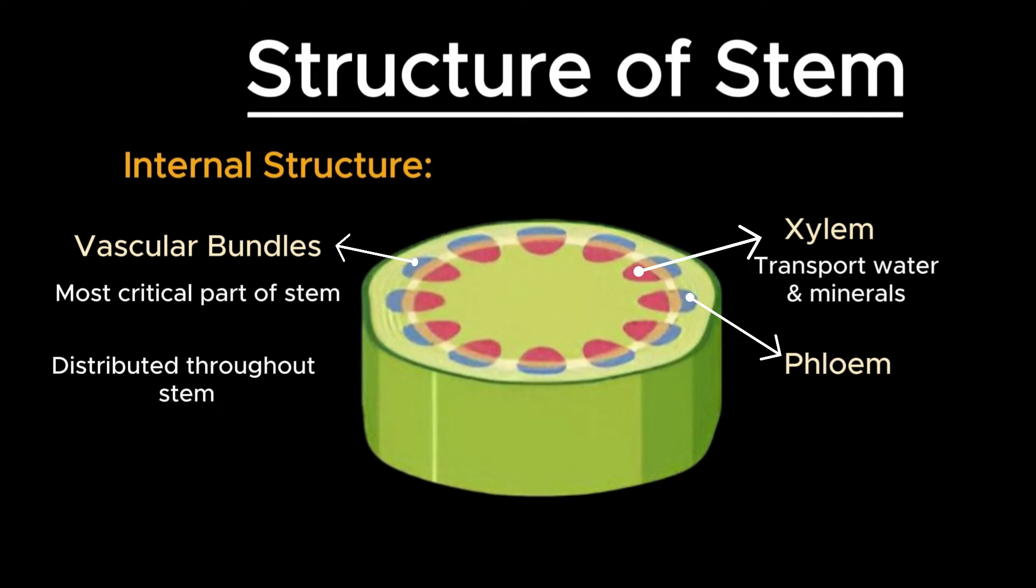In dicots, xylem is typically found on the inside of the vascular bundle.